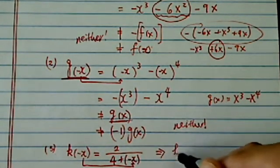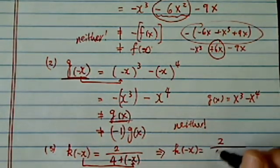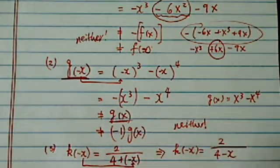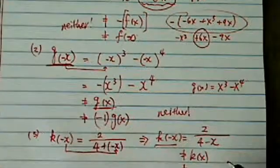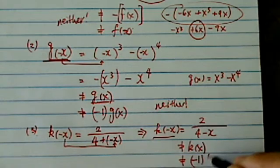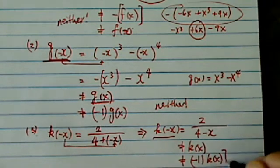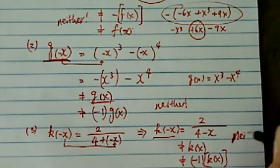Okay, so this one is really k of minus x, which equals 2 over 4 minus x. Then this one doesn't equal to k of x because we're supposed to have a plus here. It doesn't equal to minus 1 times k of x either. Okay, so the answer is neither.